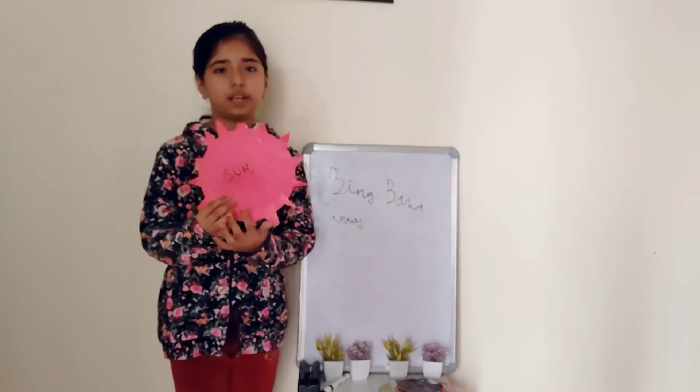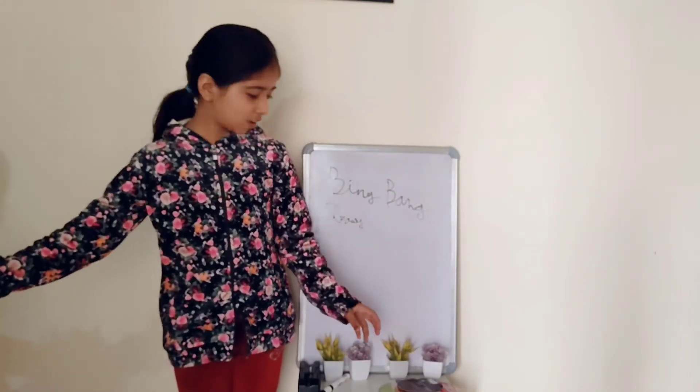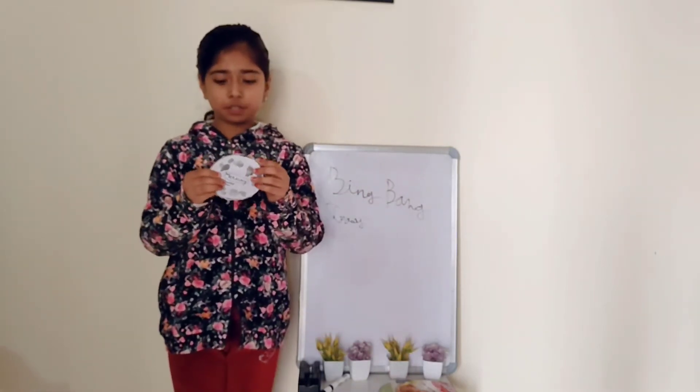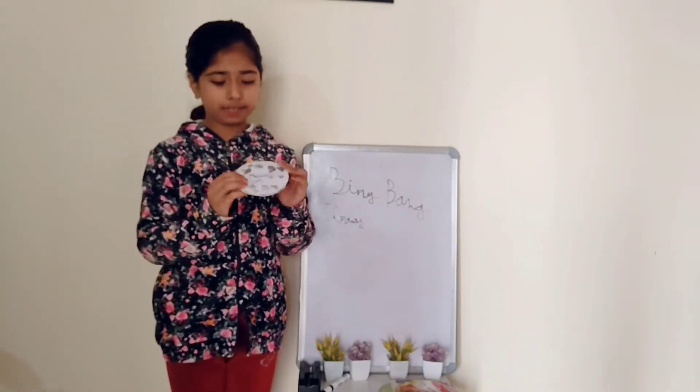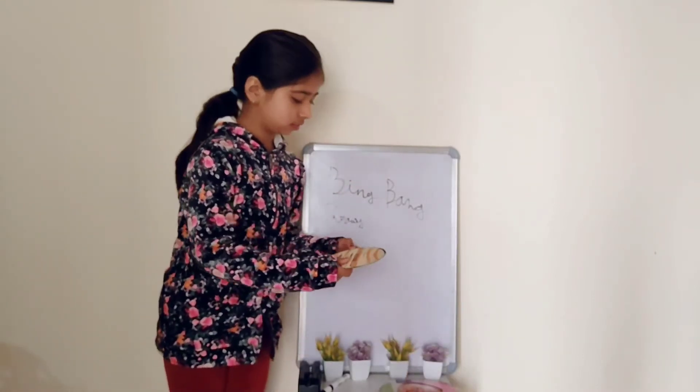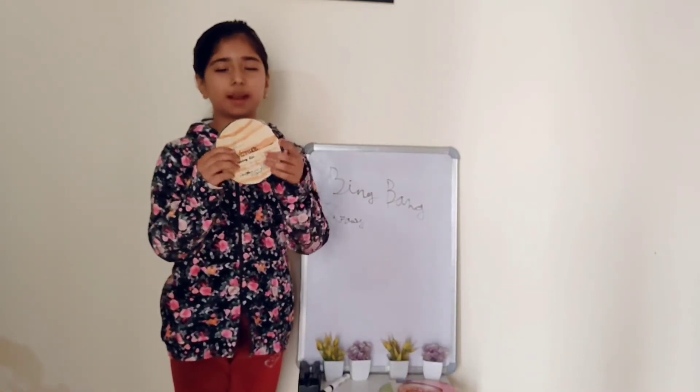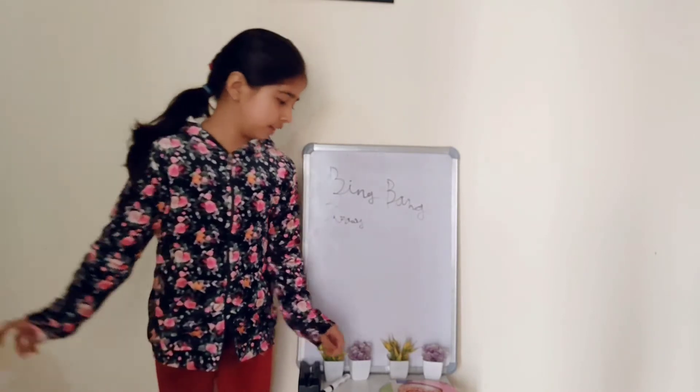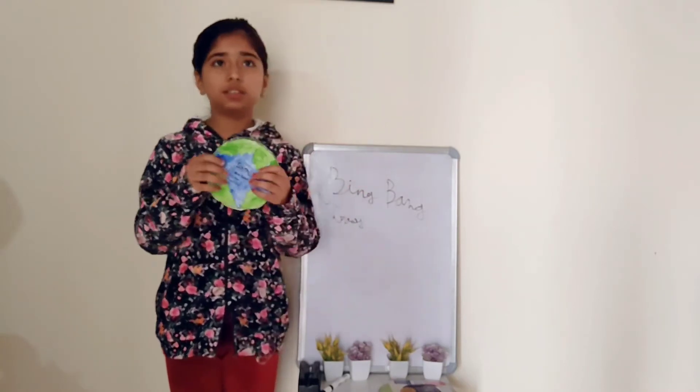Sun is the biggest star in this whole world and the second one comes to Mercury. Mercury is the smallest planet and the next one comes to Venus. Venus is the morning star, the evening star, and the brightest star, and the next one comes to Earth.